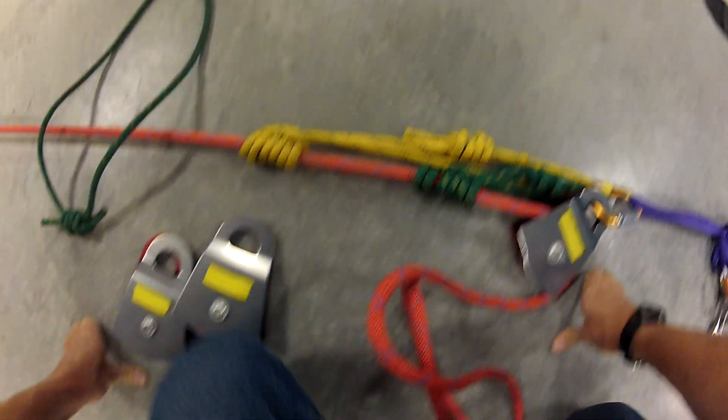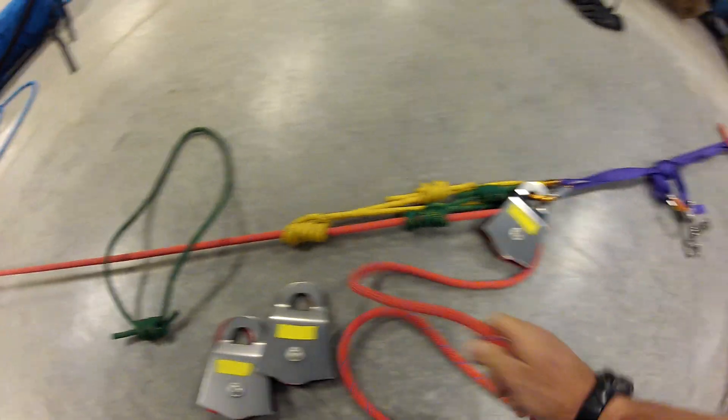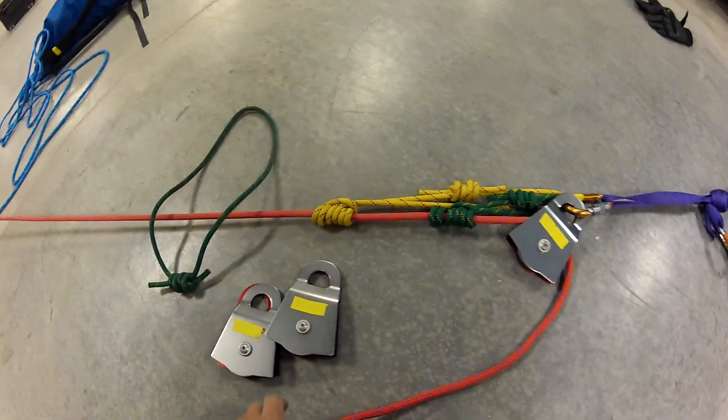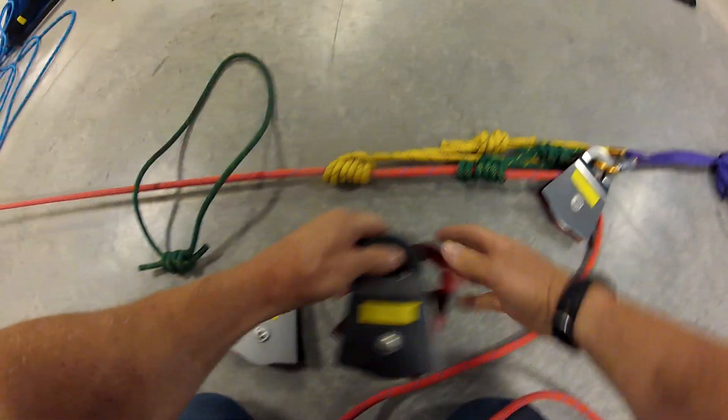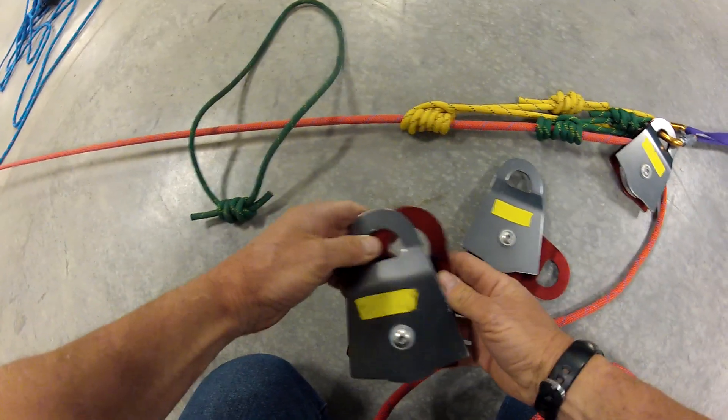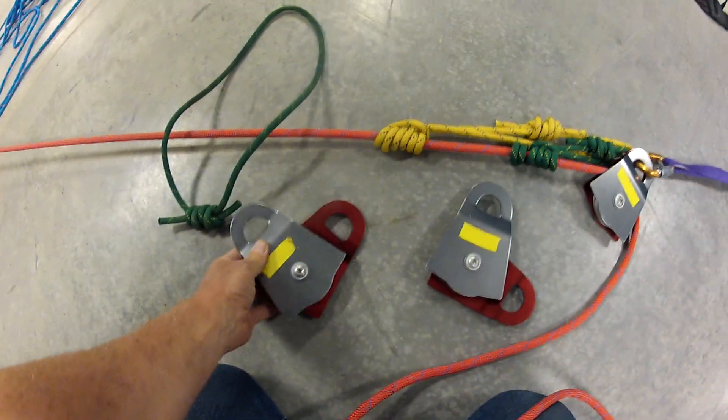Now, I'm going to build my 3-to-1 MA. The way I like to do this is I like to lay out my pulleys to begin with, depending on what I'm going to use.